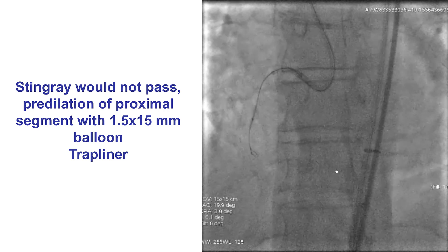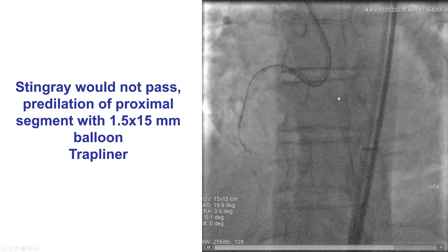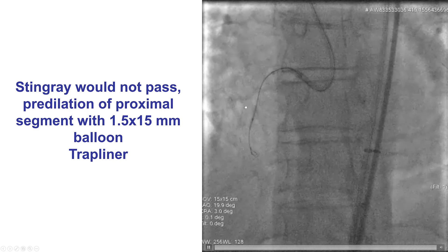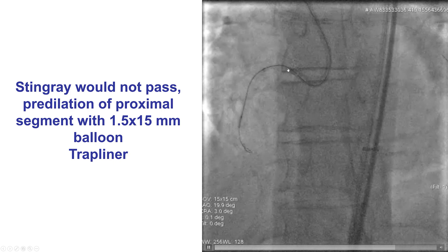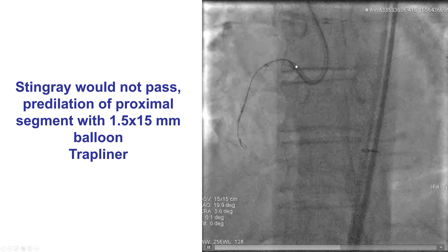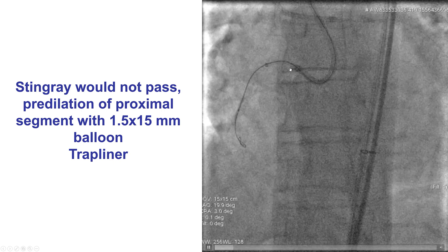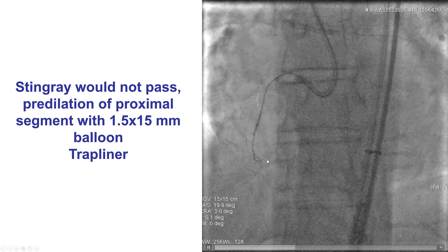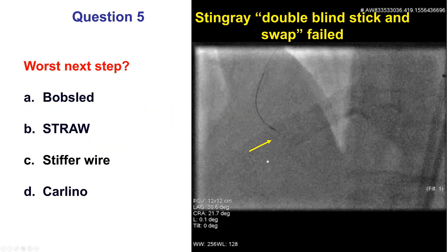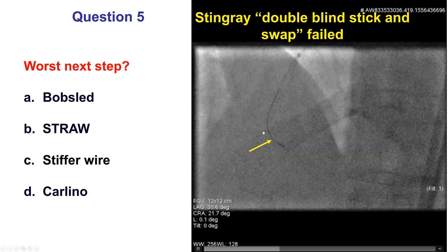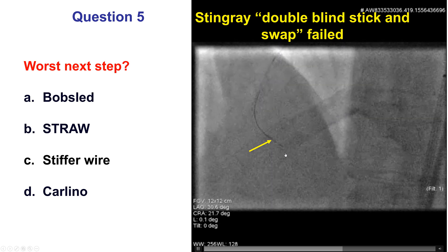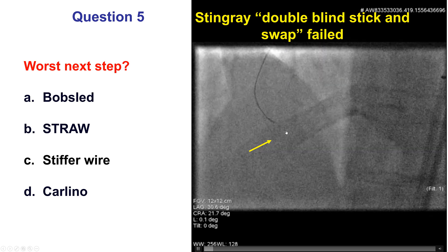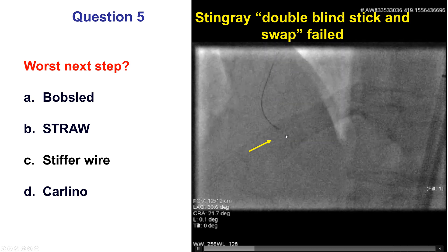We tried to deliver a stingray, which did not work. We used a guide extension, a Trapliner, and did predilatation with a 1.5 mm balloon. Guide extensions are used in the vast majority of ADR cases because they not only provide support but also decrease the likelihood of forming a significant hematoma within the subintimal space. Eventually we were able to advance the stingray all the way to the distal vessel and did re-entry attempts using the double blind stick-and-swap technique. However, those were unsuccessful.